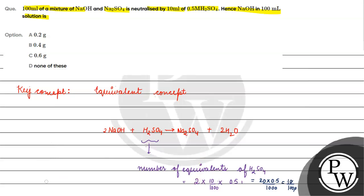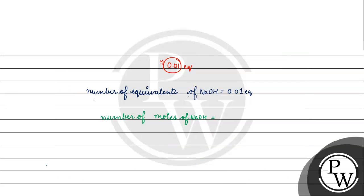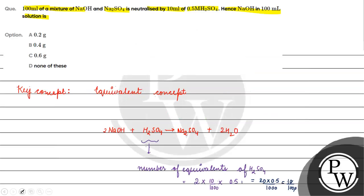H2SO4 is dibasic. So we will do 1 into 0.01, giving us 0.01 moles of NaOH.